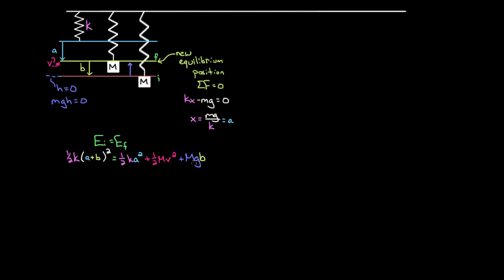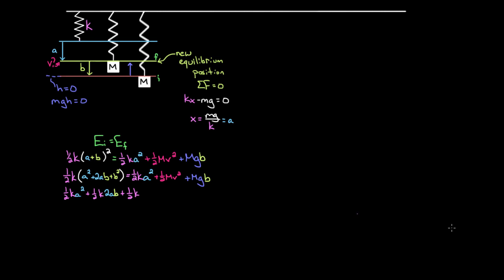To make progress, we expand the left side. One half K times (A plus B) squared becomes one half K times (A squared plus 2AB plus B squared), which gives us one half KA squared, plus KAB, plus one half KB squared. Setting this equal to the right side, we can immediately see that the one half KA squared terms cancel from both sides.